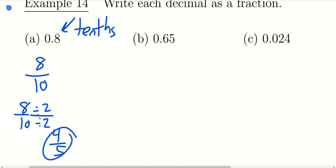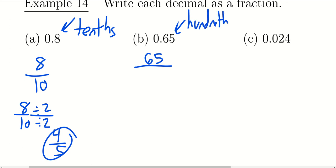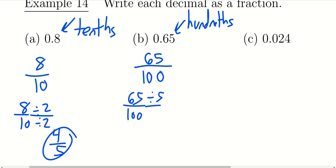For 0.65: throw away the decimal point to get 65 as the numerator. The last digit is in the hundredths position, so we put 65 over 100. Both 65 and 100 are divisible by 5: 5 goes into 65 thirteen times, and into 100 twenty times, giving a final answer of 13 over 20.